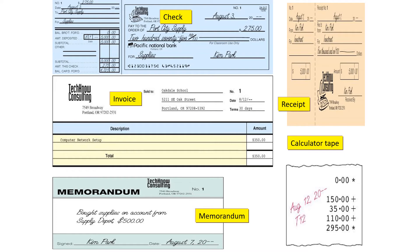Looking at our source documents, there are different types. We have a check, which is usually when we're paying cash. A receipt is usually when someone pays us cash. The invoice is for when we sell on account or buy on account. A memorandum is when we don't have any other source document. And calculator tape would be like a Z report from your cash register. As we move on, you'll learn that the source document will help you decide which journal it goes in and what you're going to be doing.